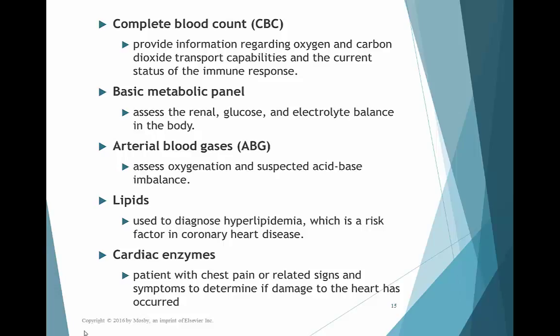When looking at arterial blood gases, I evaluate acid-base balance by looking at pH, CO2, and bicarb. I also need to look at PO2 and the calculated O2 saturation to determine if the patient is hypoxic. Remember when reviewing ABGs to assess both the acid-base balance and the oxygenation status of your patient.